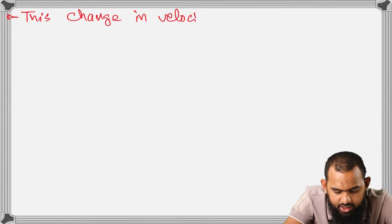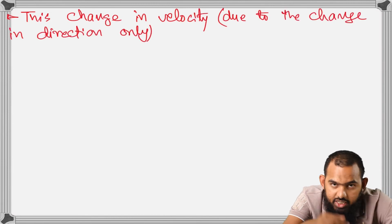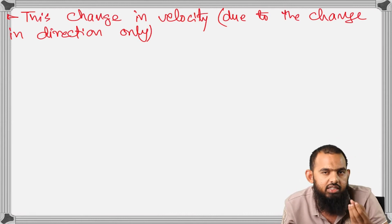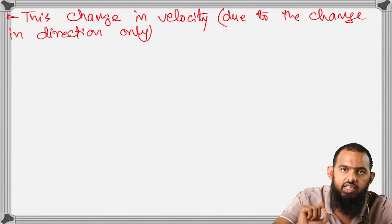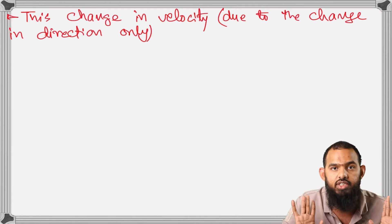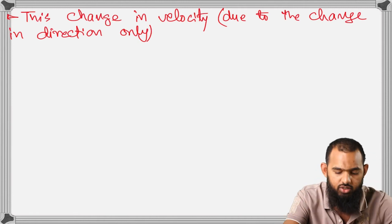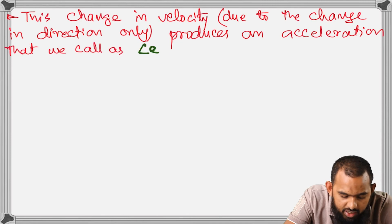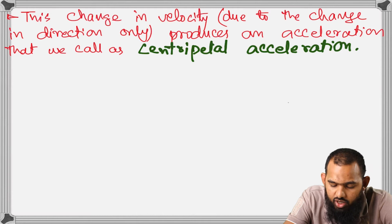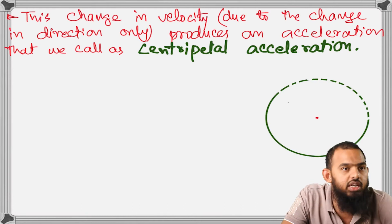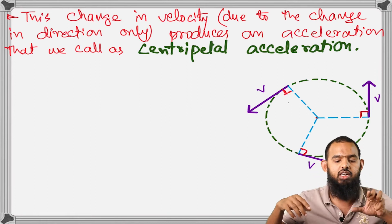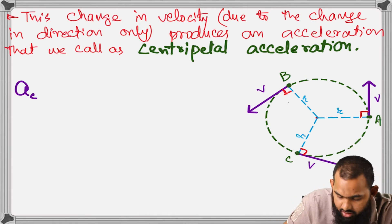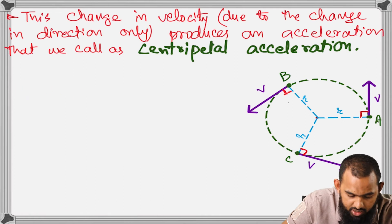This change in velocity — caused only by the change in direction, not by any change in speed — produces an acceleration. This acceleration is what we call centripetal acceleration. Throughout the motion, it acts towards the center of the circular path. So centripetal acceleration always acts towards the center of the circular path.